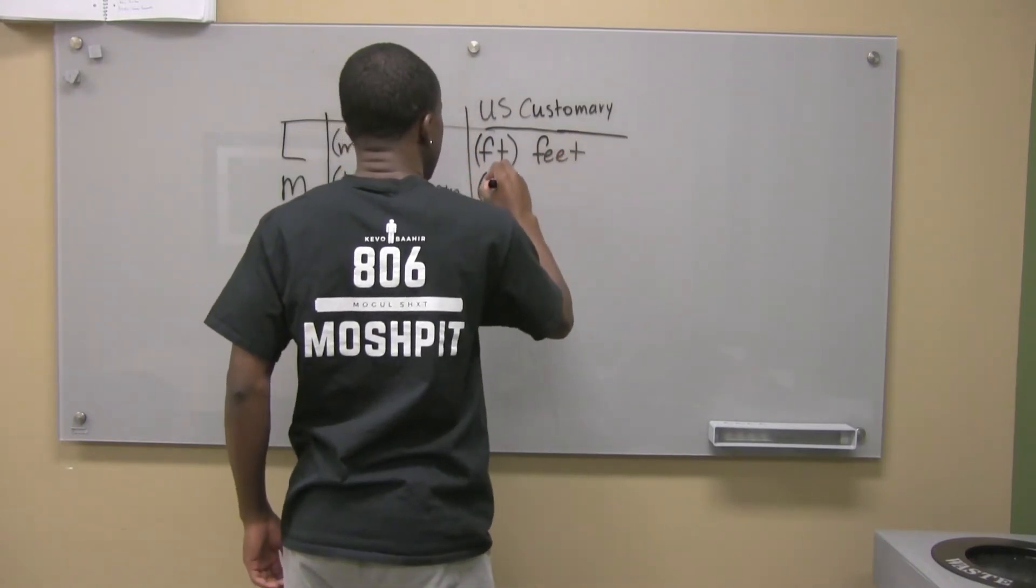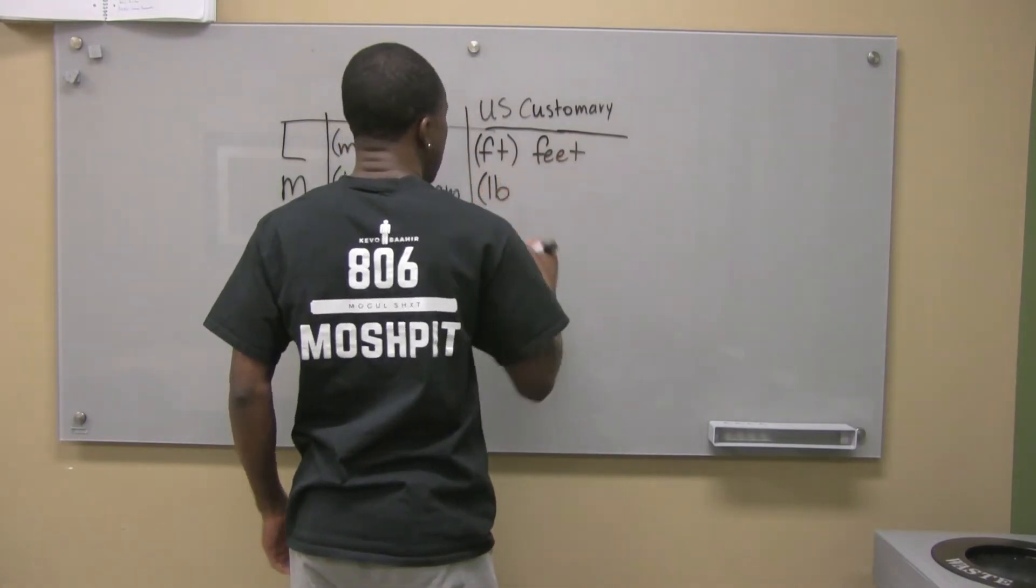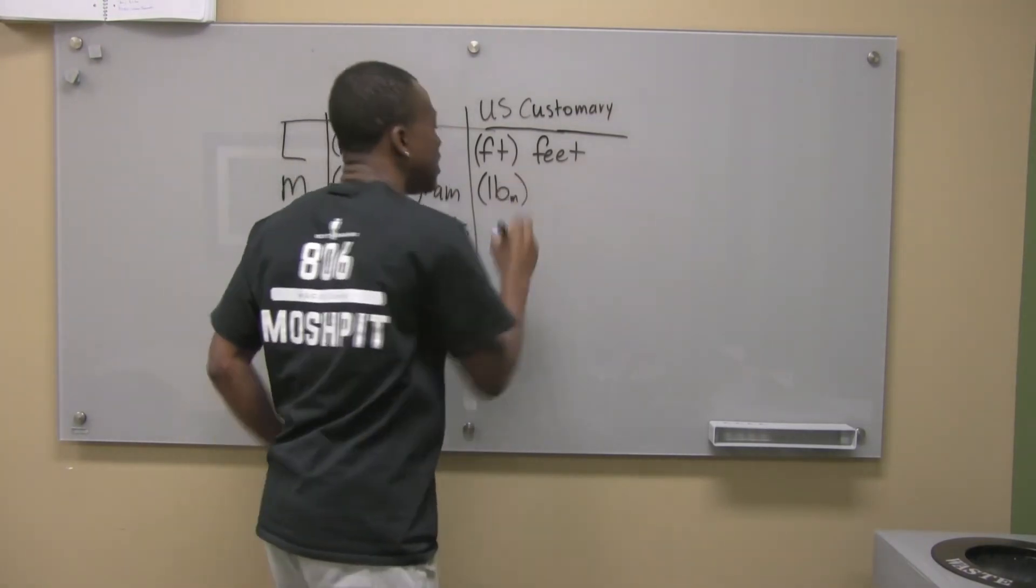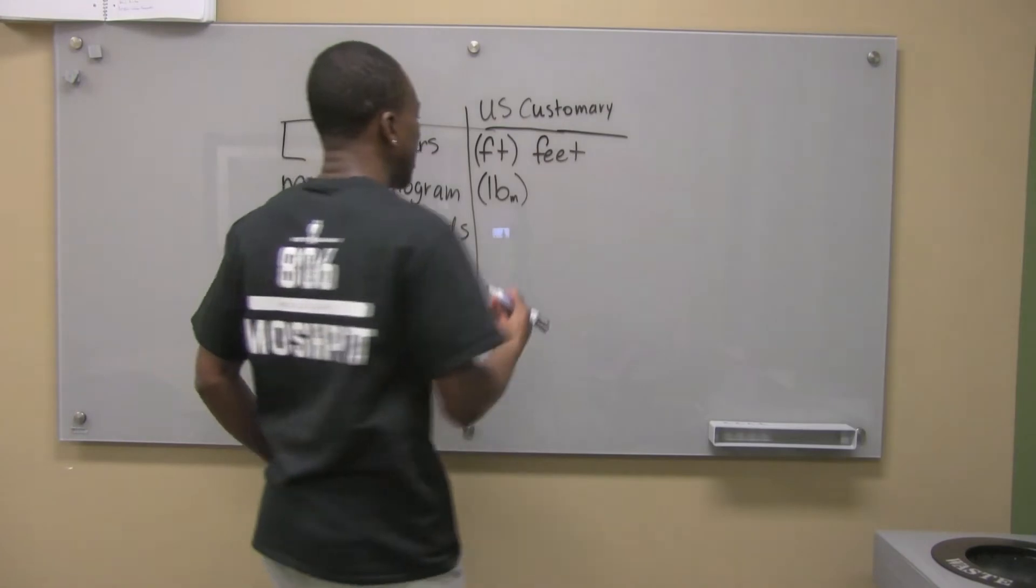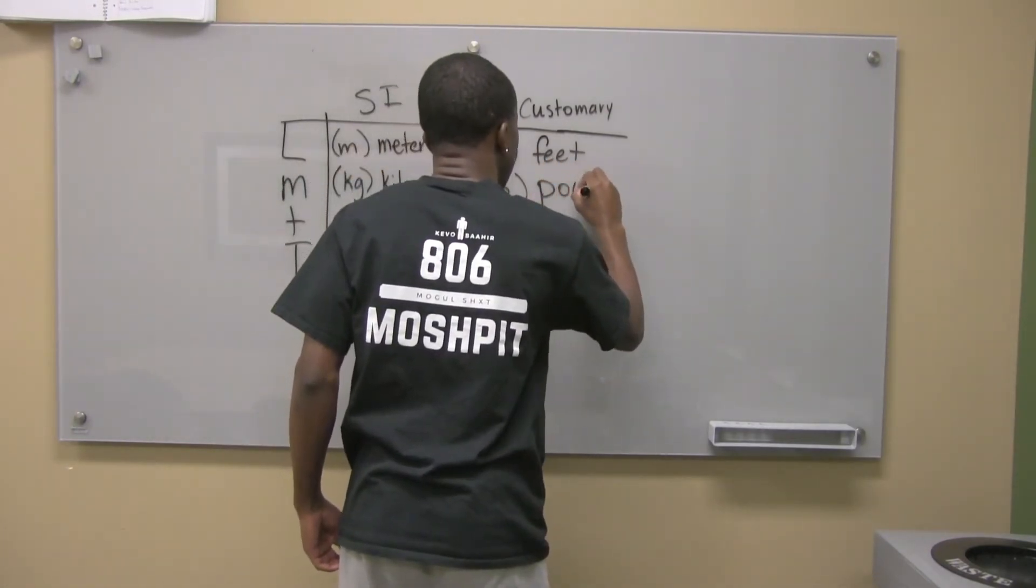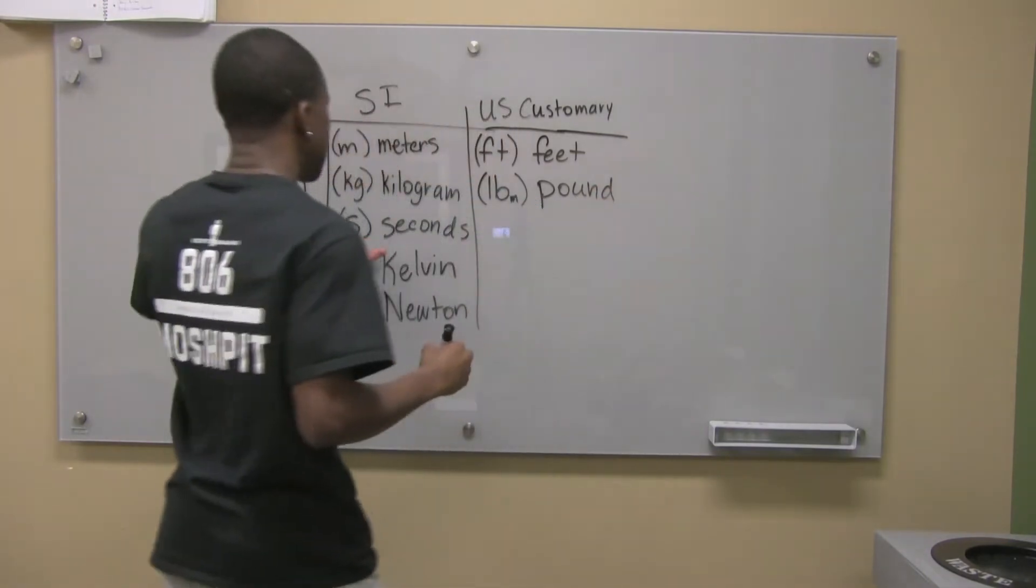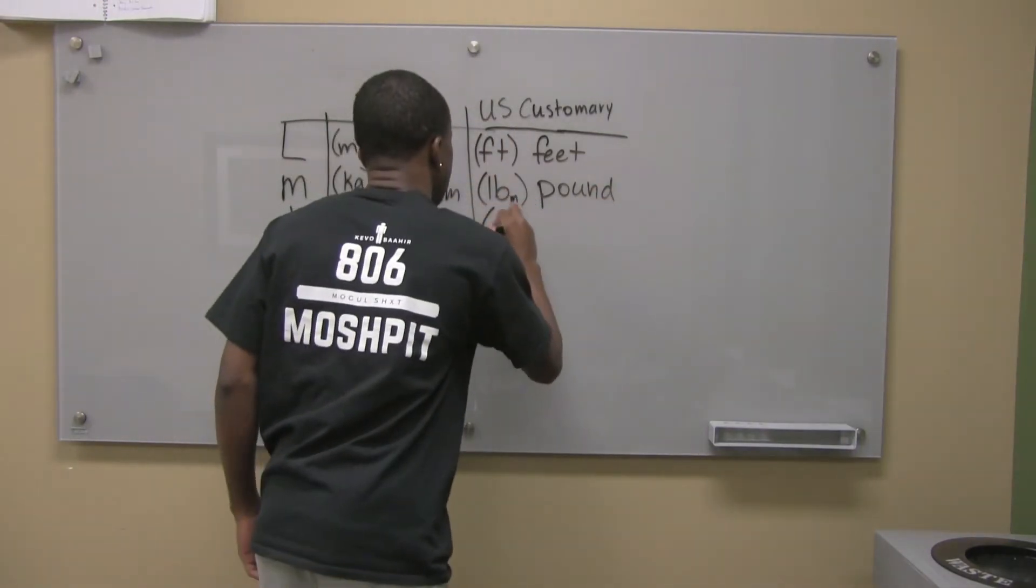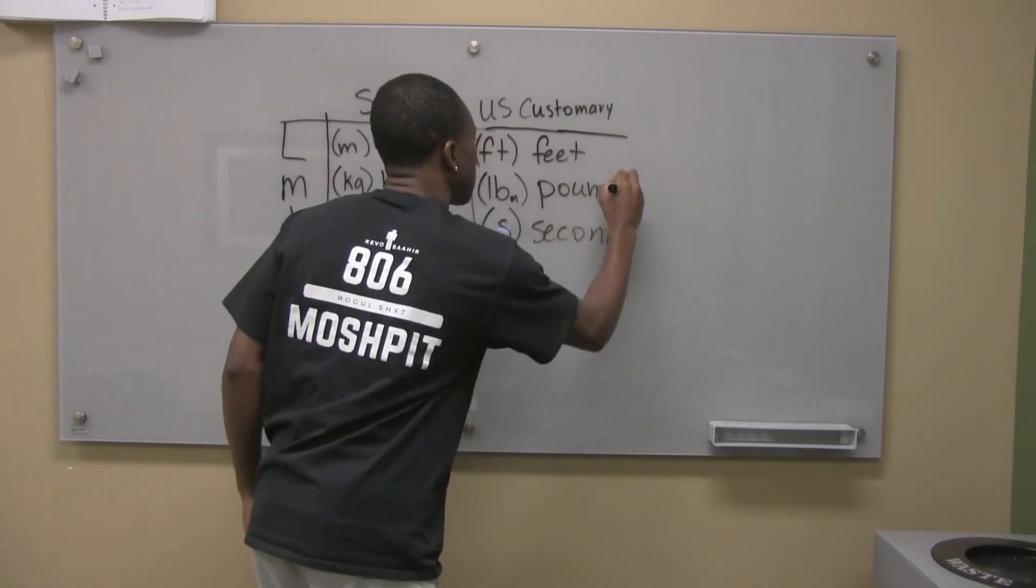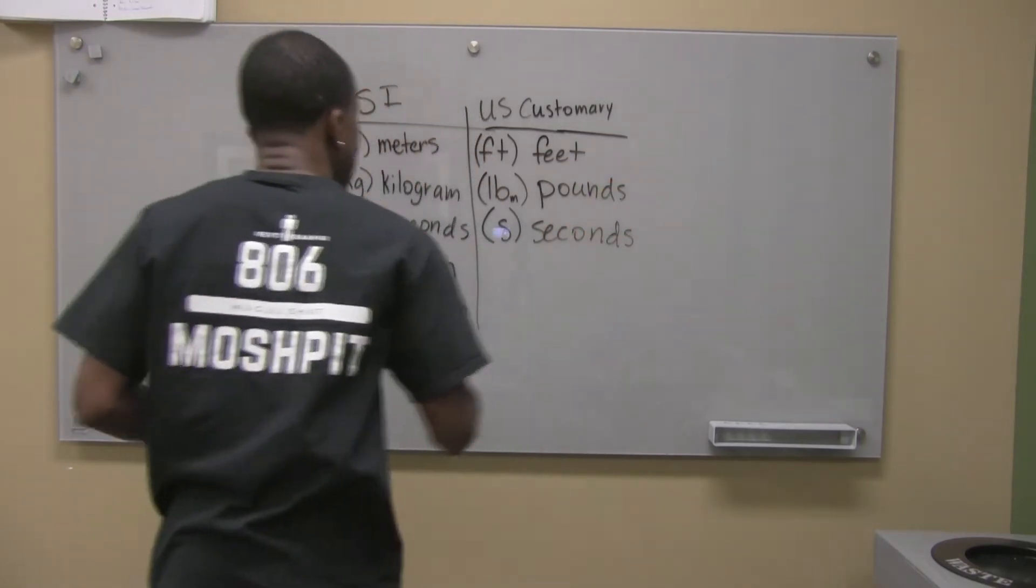Mass is given in pounds. Now, you might see me write like pounds with a small M. That just means pound mass. And there's another type of pound. But we'll see. Time is also given in seconds.